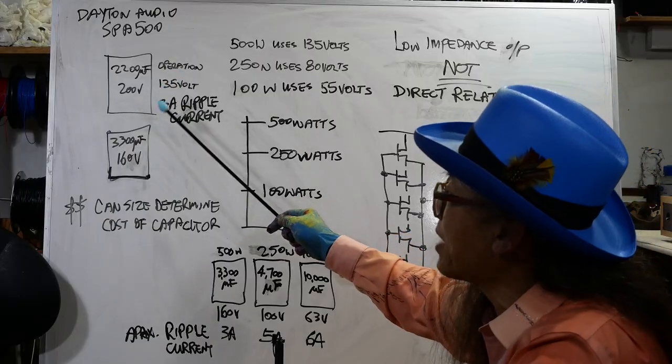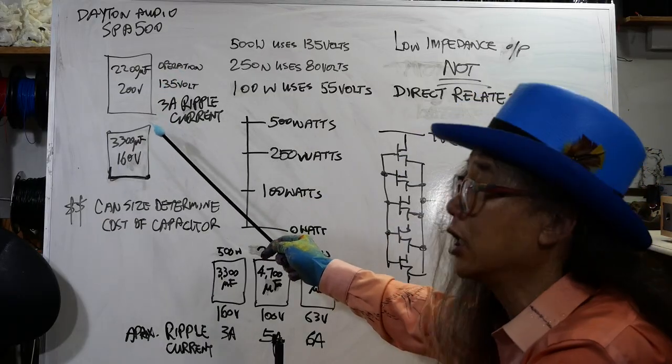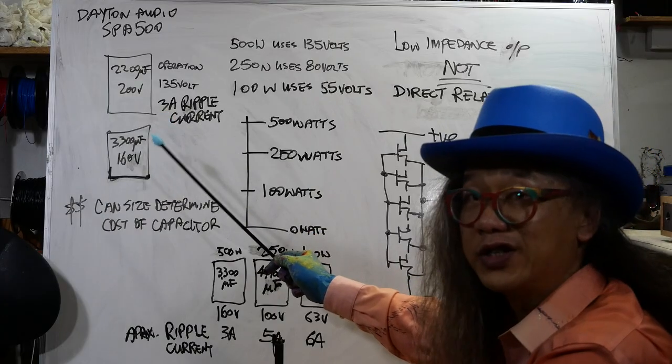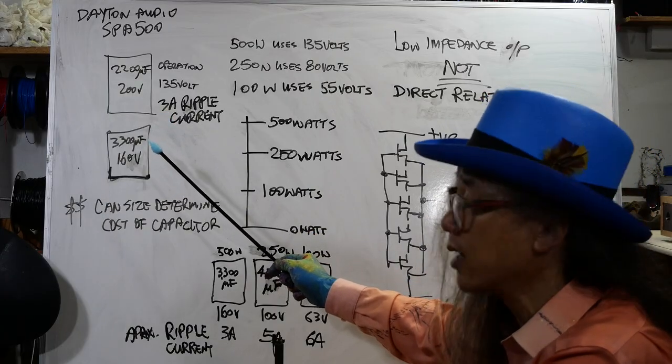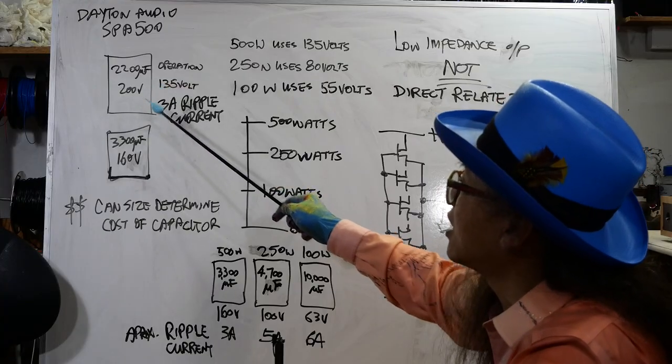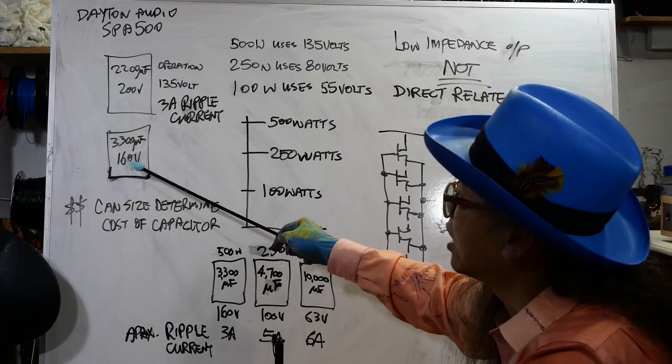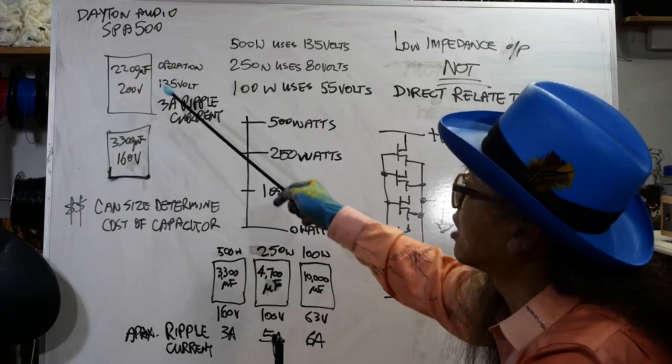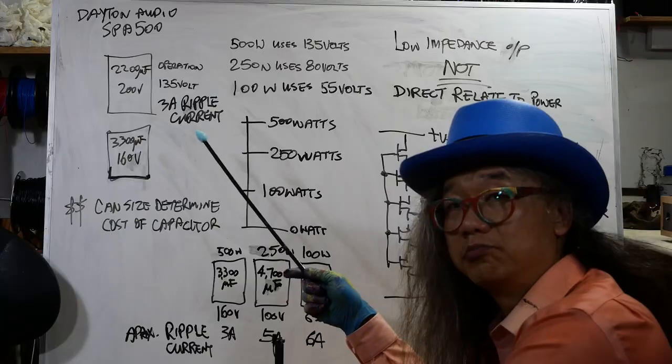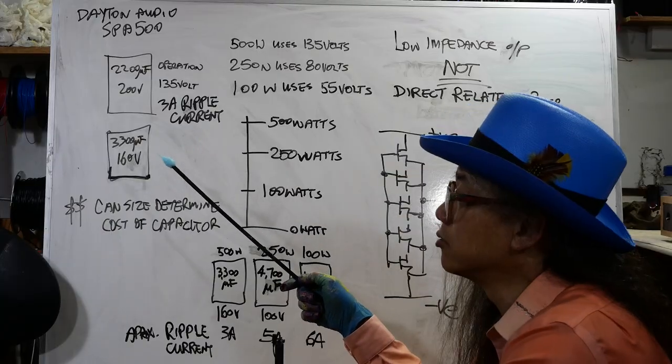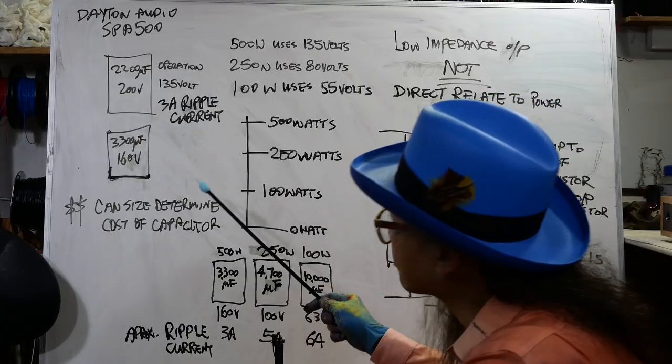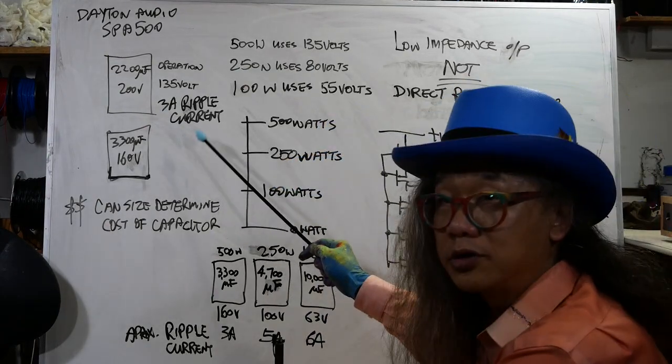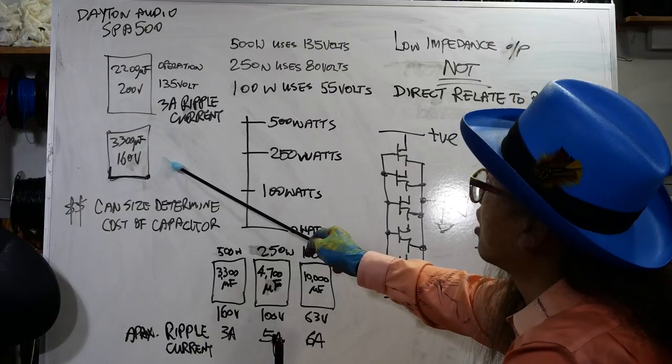Capacitor costs are basically depending on the physical size of the capacitor can. So for the same size, they can put a 3300 microfarad 160 volt capacitor instead of a 2200 microfarad. That would end up with the same cost or very similar. I don't know why they do that, but I'm not going to dig into it.